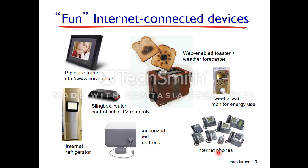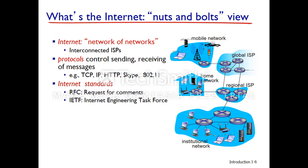Another way you can look at the internet is as a network of networks — simply interconnected internet service providers. In the internet you're going to have protocols that control the sending and receiving of messages. These protocols can either be open, in which case they're typically published as standards written by the Internet Engineering Task Force, the IETF — these standards are called Requests for Comments — or they can be proprietary, such as Skype, which is owned by Microsoft. There are other groups that write standards as well; for example, the 802.11 standard for Wi-Fi is published by the IEEE, the Institute for Electrical and Electronics Engineers.